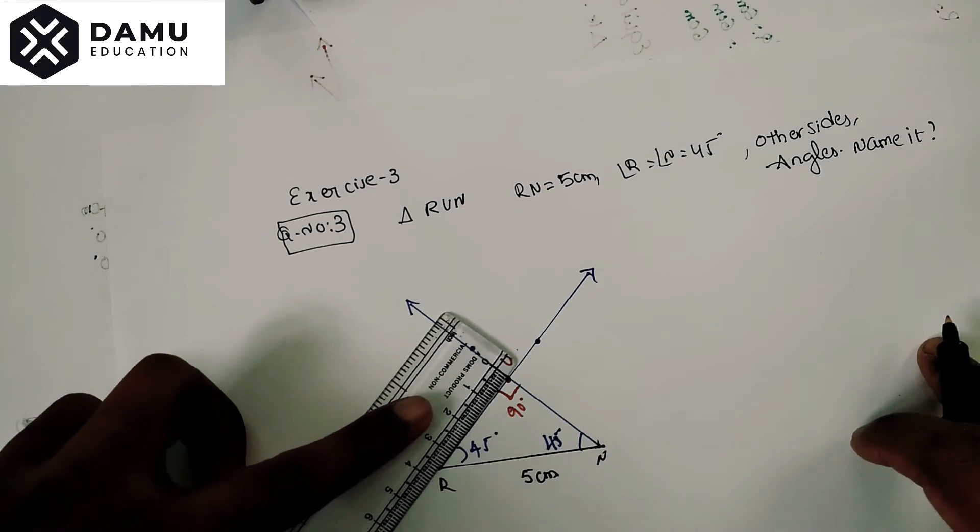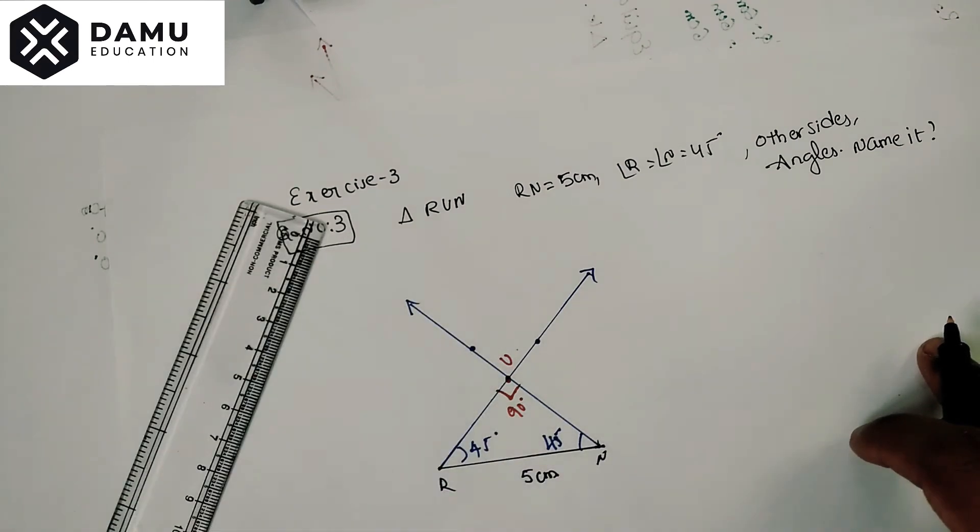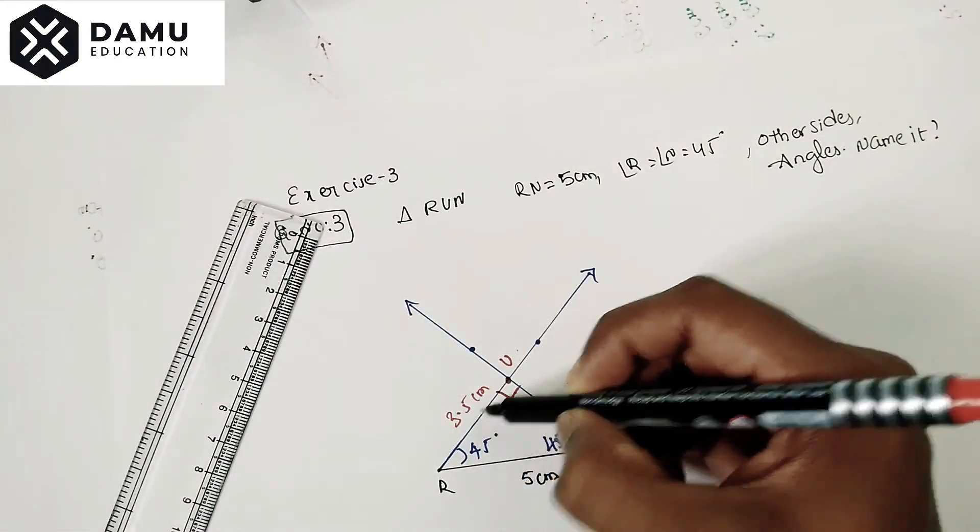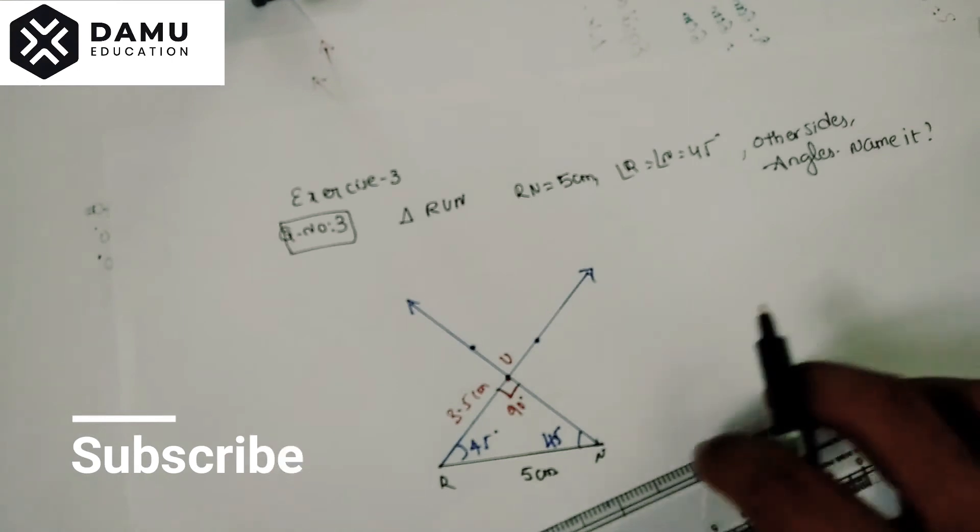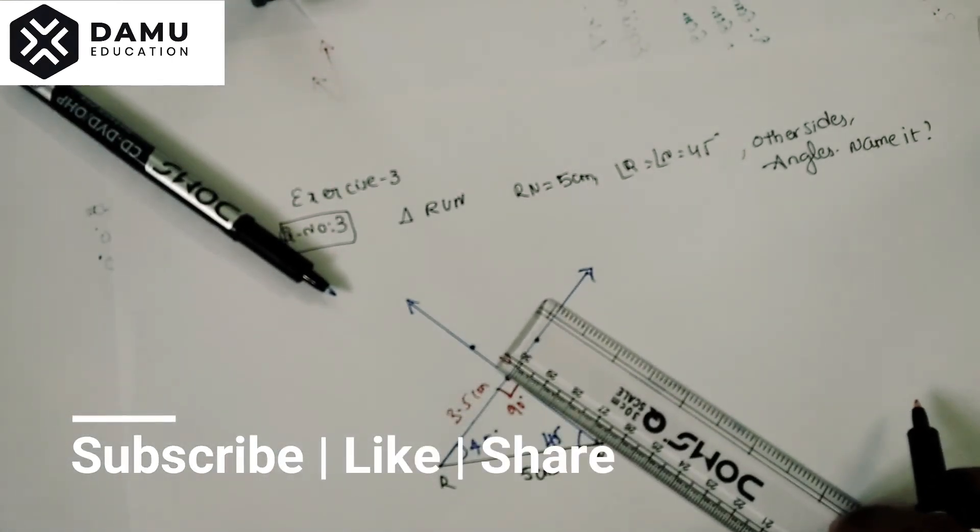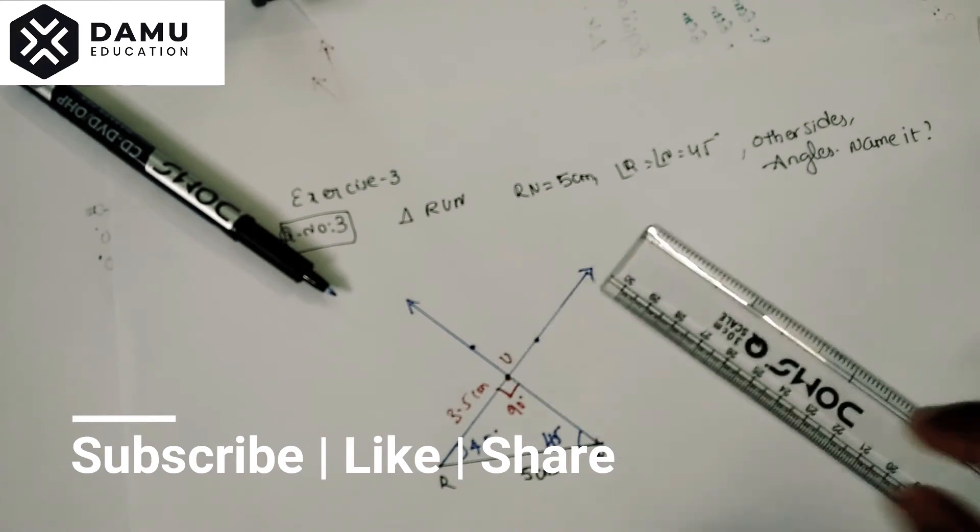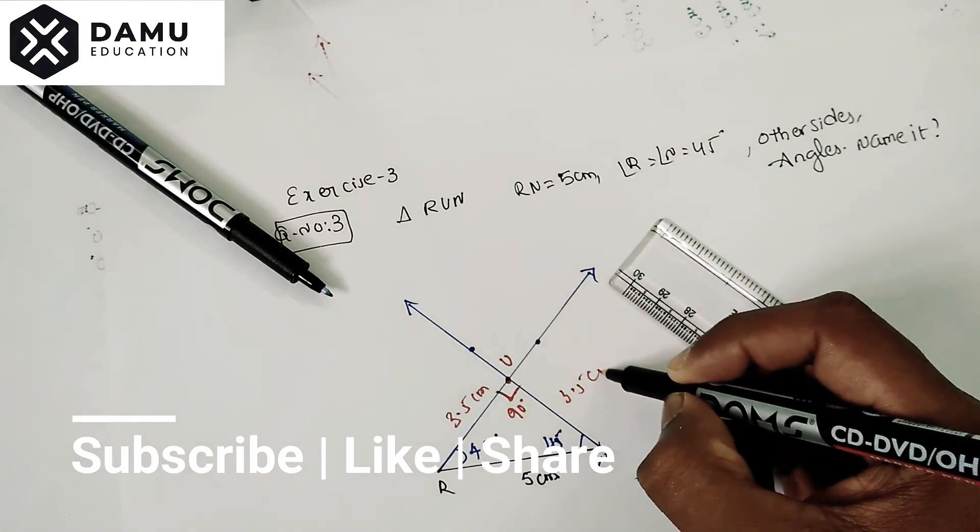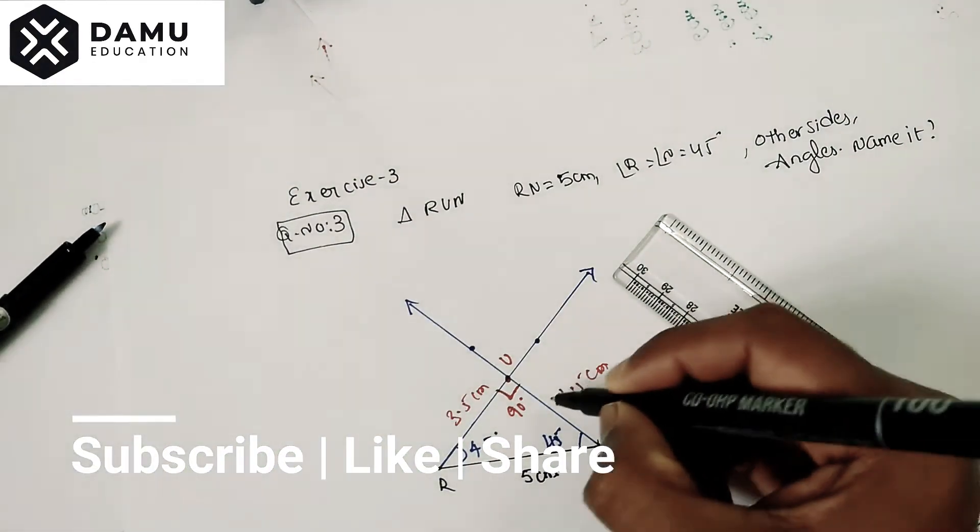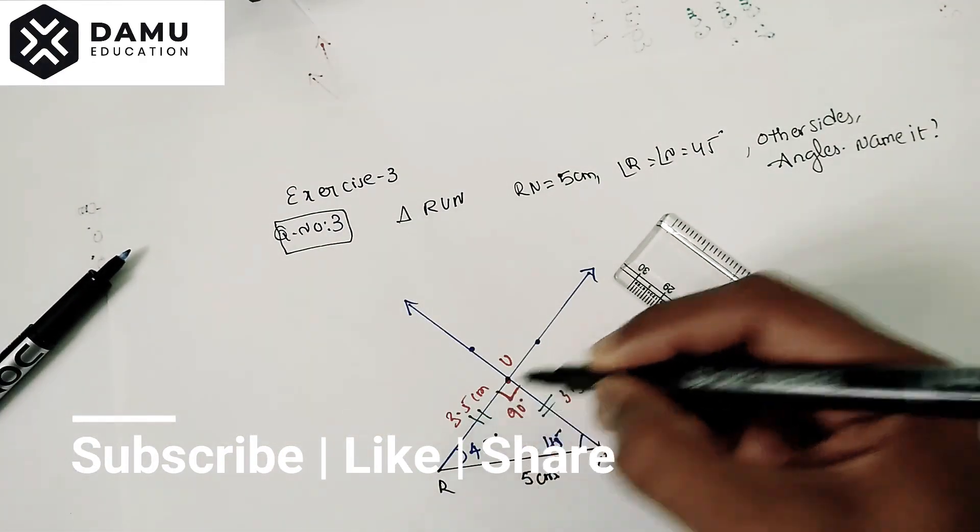So it's getting 3.5 cm. Here also 3.5 cm. That means these two sides are equal: 3.5 cm and 3.5 cm.